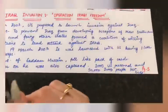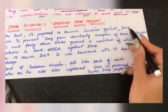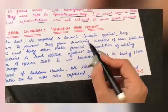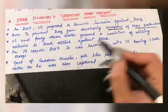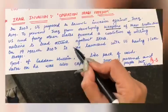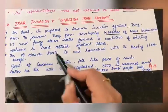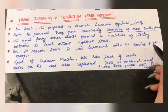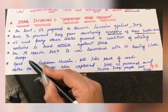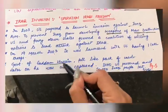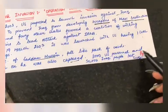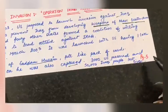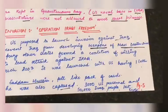Next, the operation that came was the Iraq Invasion — Operation Iraqi Freedom — in 2003. The US proposed and launched the invasion of Iraq, with the aim that Iraq had developed weapons of mass destruction. The US and some 40 other states formed a coalition to attack Iraq. On 19th March 2003, the operation was launched with the US sending one lakh troops. Saddam Hussein's government fell like a pack of cards and he was later captured. Around 3,000 US personnel and 50,000 Iraqi people were casualties.